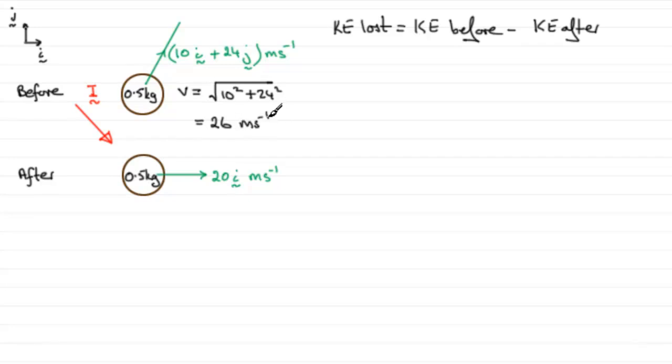So when it comes to the kinetic energy loss, we've got to look at the kinetic energy before, which is going to be a half, the mass 0.5, multiplied by v squared, which will be 26 squared.